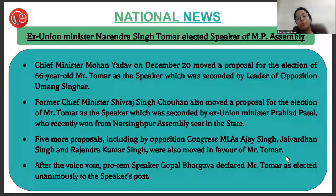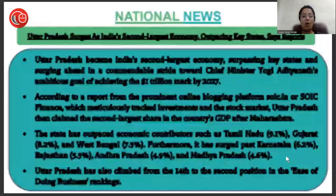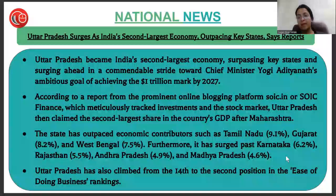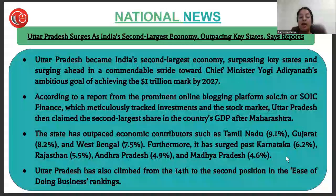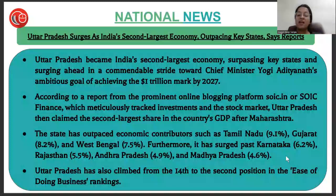Uttar Pradesh has surged as India's second largest economy, outpacing key states according to a report. UP surpassed Tamil Nadu, Gujarat, West Bengal, Karnataka, Rajasthan, and Madhya Pradesh, making a commendable stride towards Chief Minister Yogi Adityanath's ambitious goal of achieving a one trillion dollar economy by 2027. UP has also climbed from 14th to second position in the Ease of Doing Business ranking.